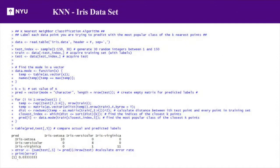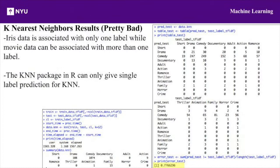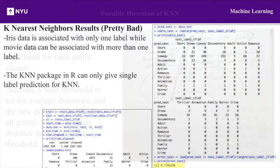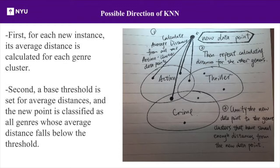This is KNN on the iris dataset that we did for homework. The error is extremely low at only 3.3%, and basic KNN is a very effective machine learning technique for this dataset — because it only has a single label, unlike our movie synopsis dataset. The biggest difference between the iris classification problem and the genre classification problem is that iris data is associated with only one label, while movie data can be associated with more than one label. A KNN package in R can only give single-label prediction, so the error rate would be largely decreased if we could make KNN generate multiple predictions for movies. This is a future possible direction for KNN: for each new instance, its average distance is calculated for each genre cluster, a base threshold is set, and the new point is classified as all genres whose average distance falls below the threshold.